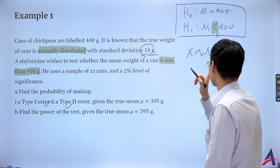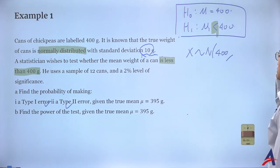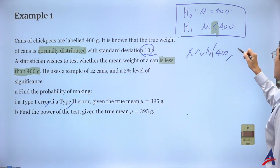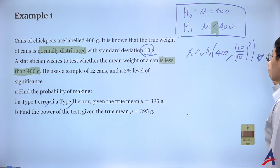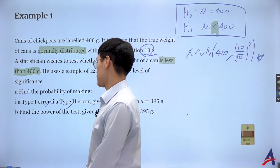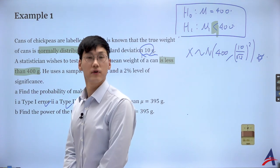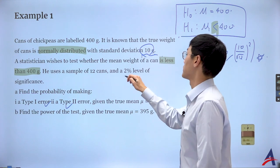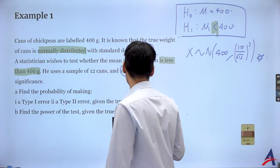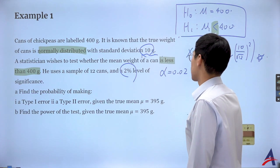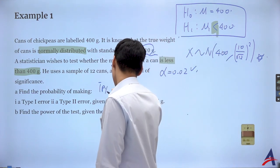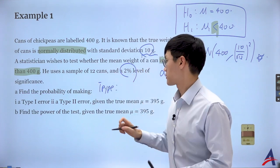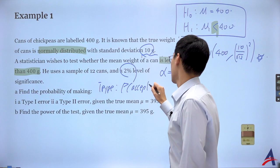The sample mean standard deviation is 10 over root 12. For type 1 error, that's quite trivial — the level of significance was given as 2%, so alpha = 0.02. That's the type 1 error, done. For type 2 error, remember type 2 is working with the acceptance region, so I need to find the acceptance region first.